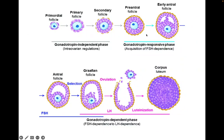We can answer that question by looking at this image of folliculogenesis. There is the primordial follicle developing into primary follicle, then into secondary follicle — this phase is the gonadotropin-independent phase. Then comes the gonadotropin-responsive phase, where FSH receptors are coming onto the granulosa cells, but still these follicles cannot be recruited by gonadotropins you give from outside.